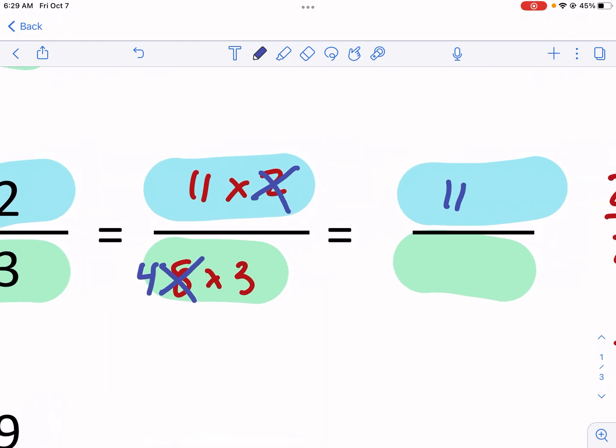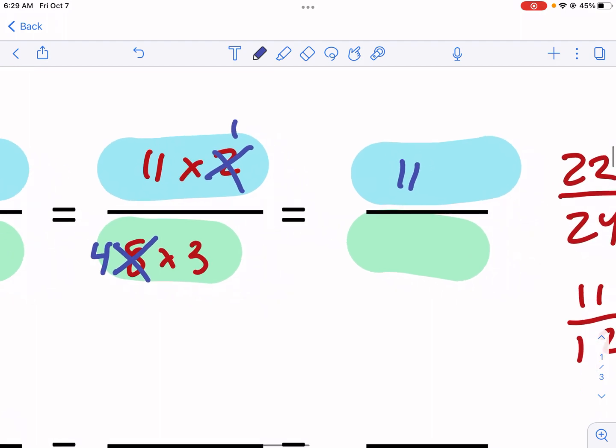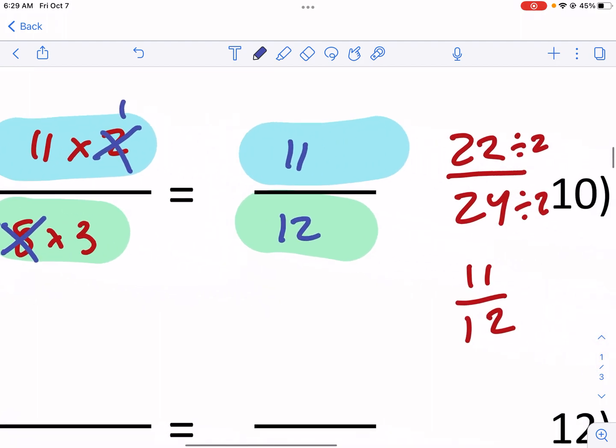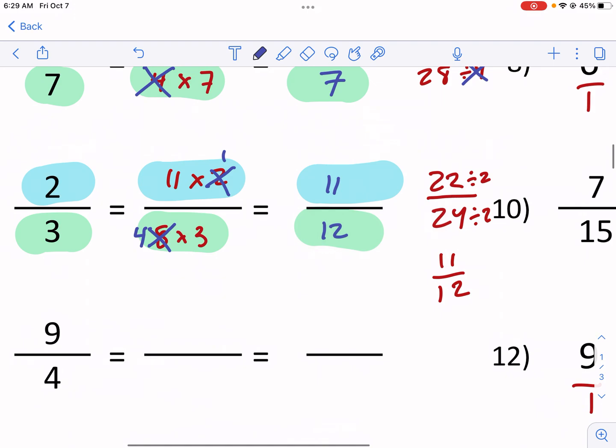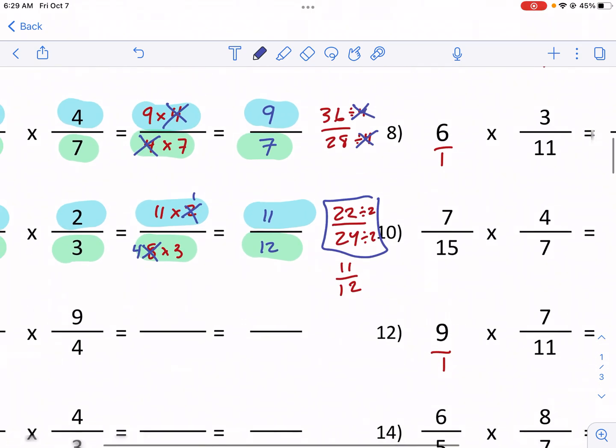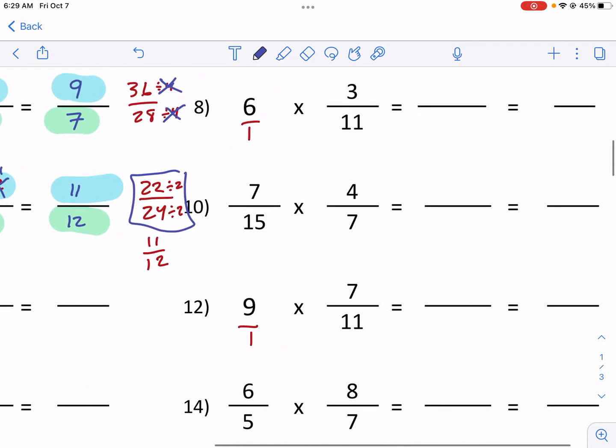So we have 11 in the top times essentially one, but it's just 11. And then we have four times three in the bottom, 12. We get the same thing. Now if that cross-canceling is confusing you, just trust in multiplying it out and then reducing when you're done. Just know that it's going to be a little bit more work than you would otherwise perform.